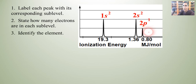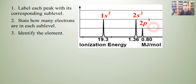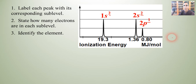Now let's identify the element. Can you think of an element that ends with 2p1? Even if you've forgotten electron configurations, you can take the superscripts and add them together: 2 plus 2 plus 1 gives a total of 5 electrons. The element with 5 electrons is boron.